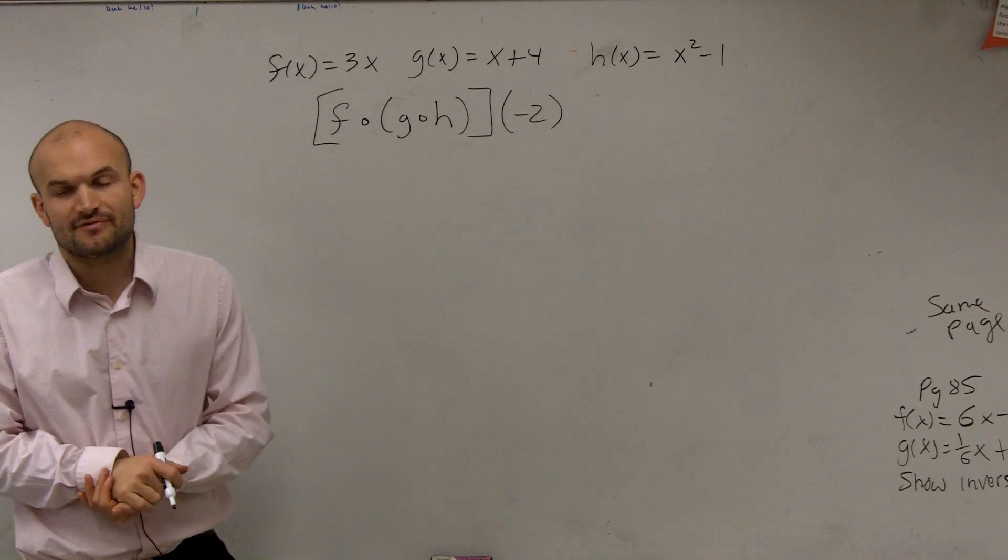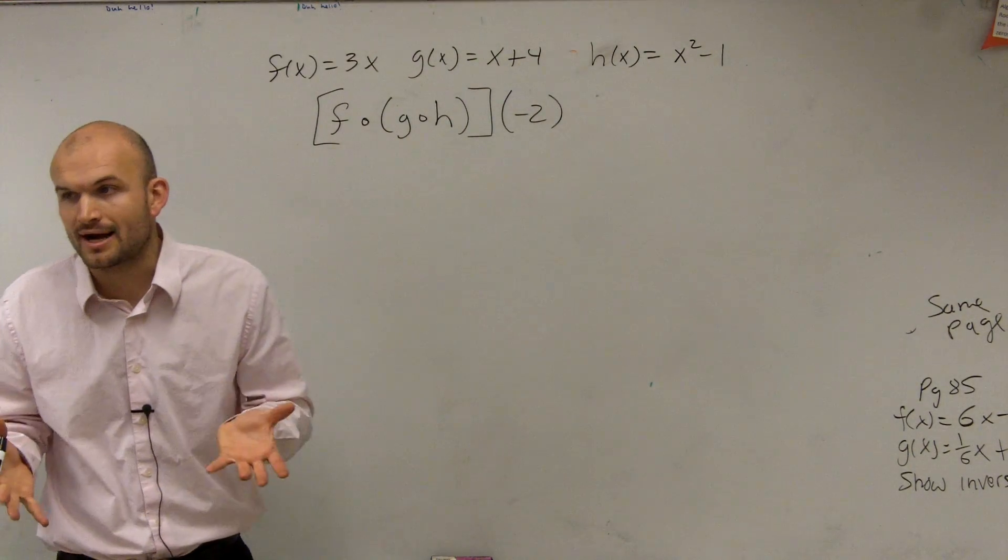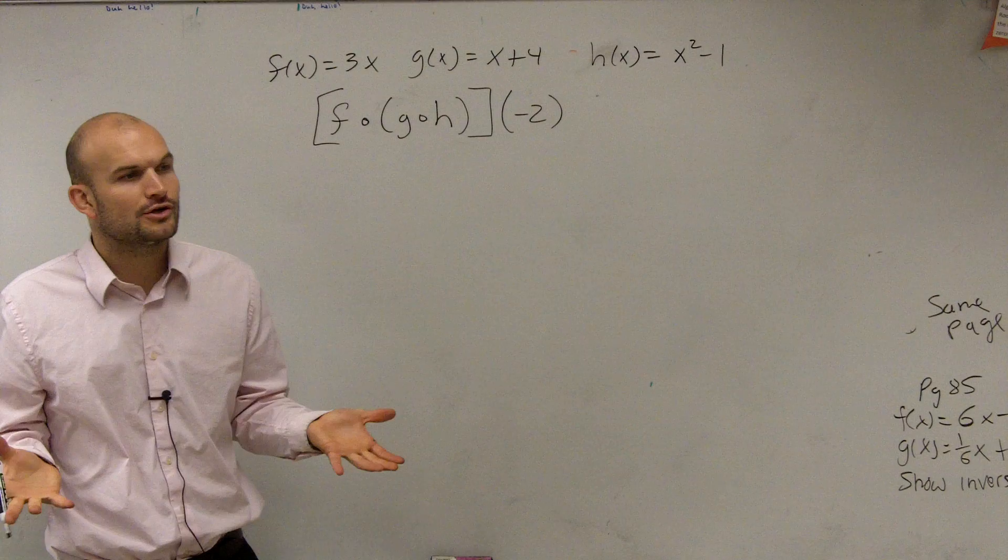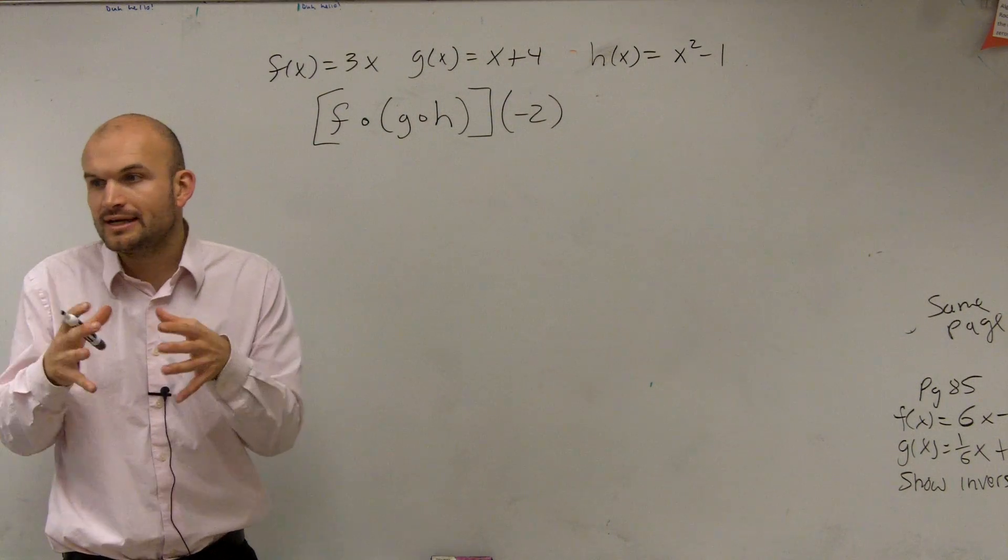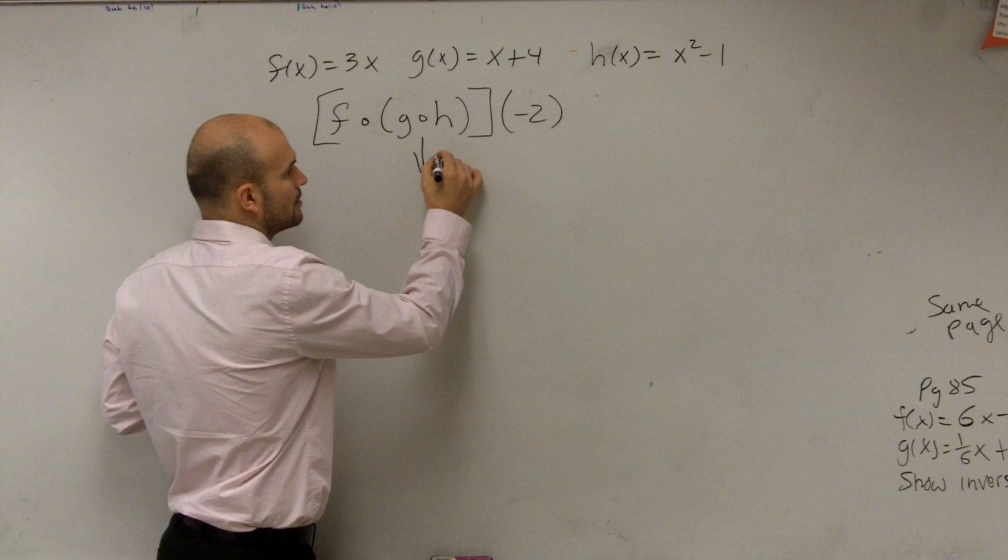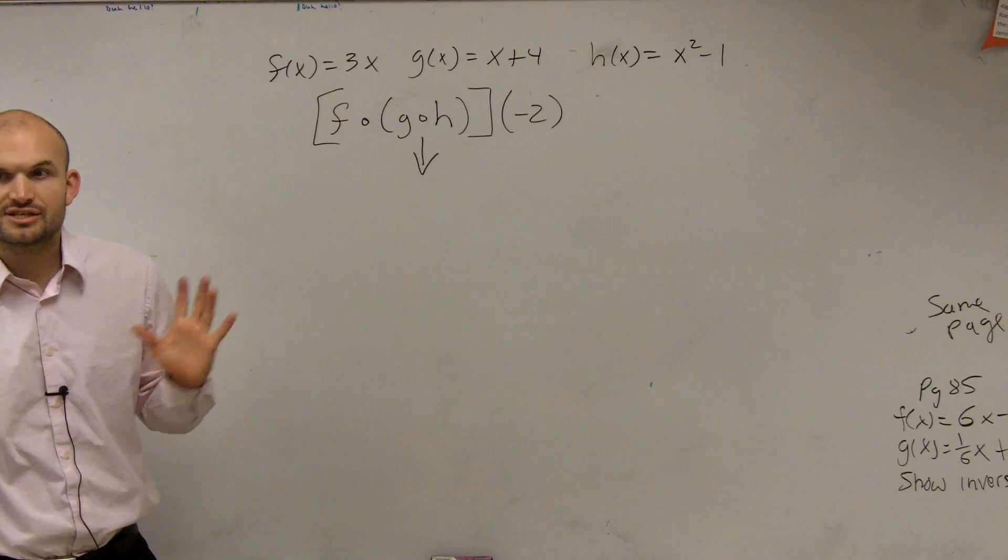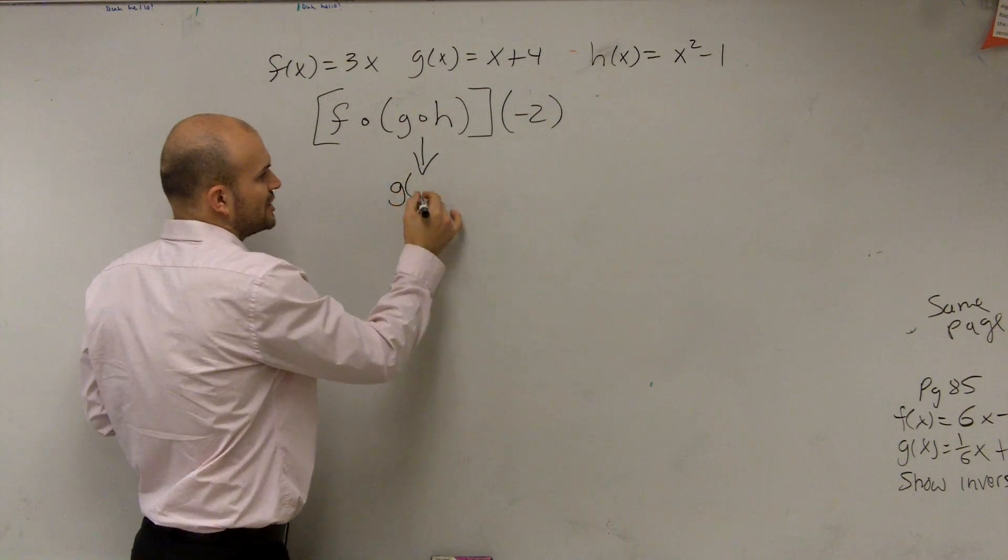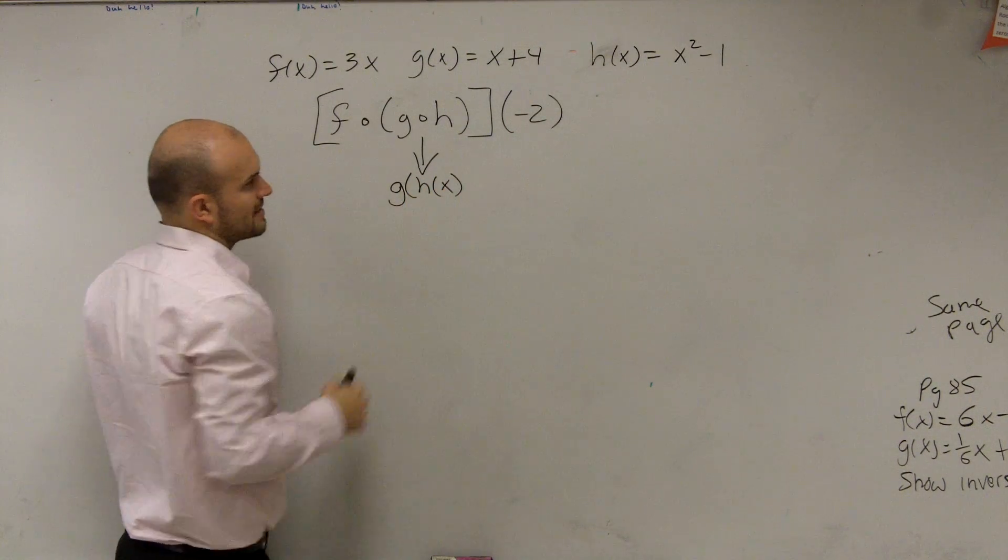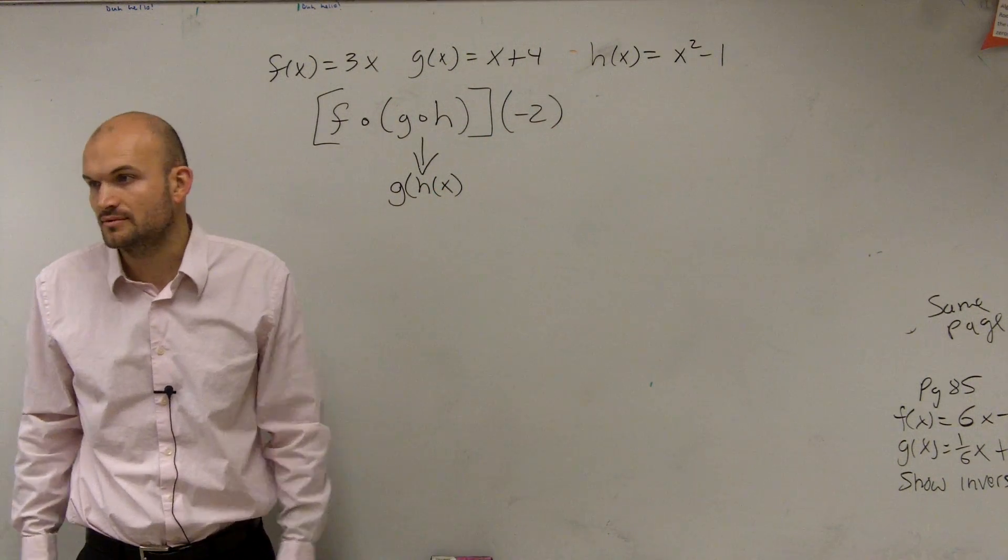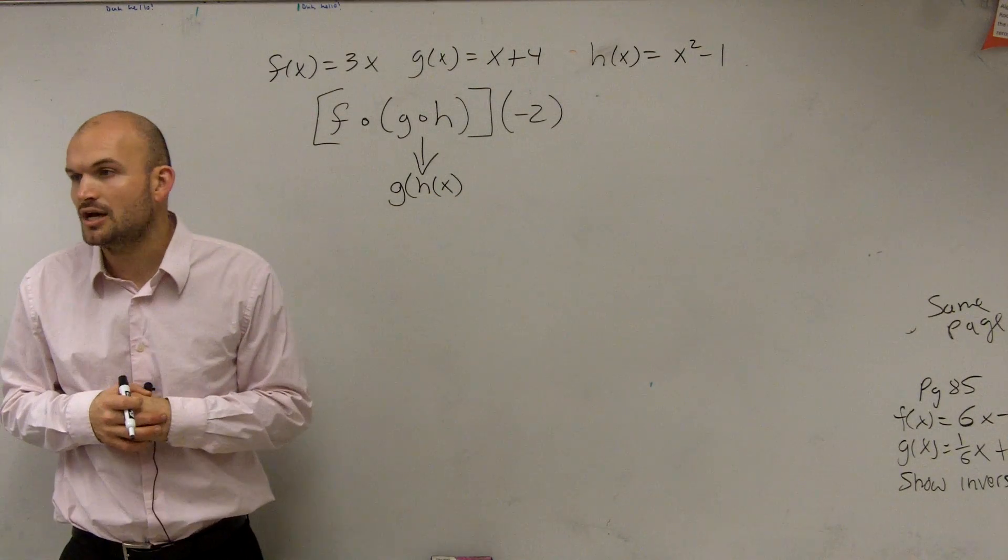So there's a couple different ways we can do this, but what I want you guys to do is let's just work on one composition at a time. And just like you follow your order of operations, do your innermost parentheses first. So let's just do g of h. Let's get that one out of the way first. Remember that represents g of h of x. Then once we figure all this stuff out, we can evaluate it for negative 2. So let's figure out what g of h is.